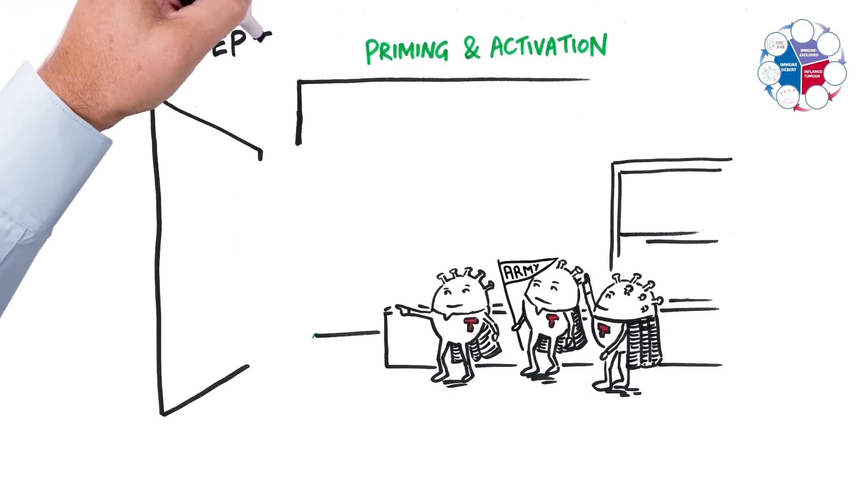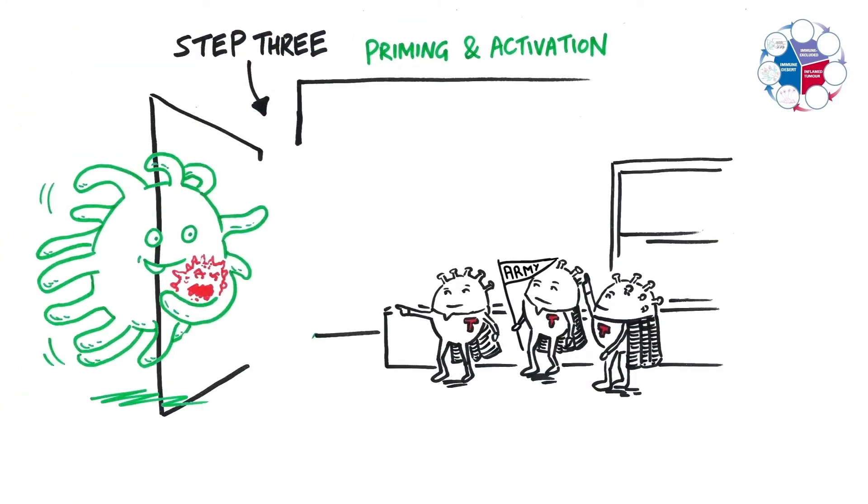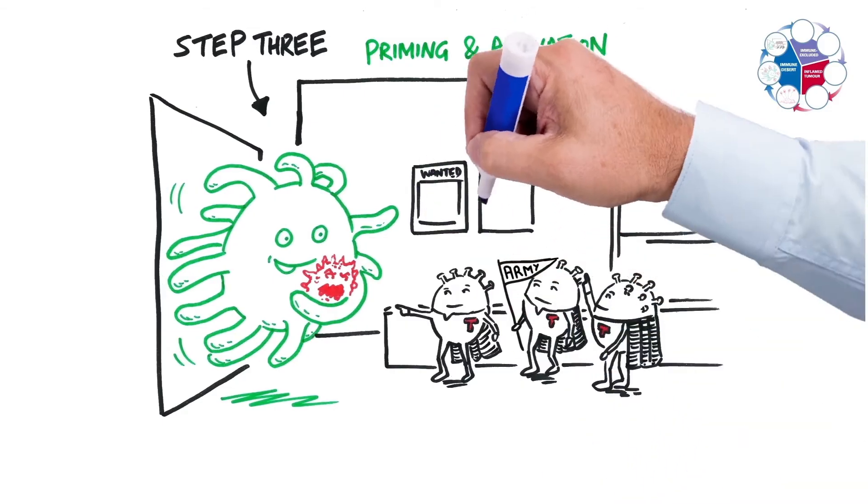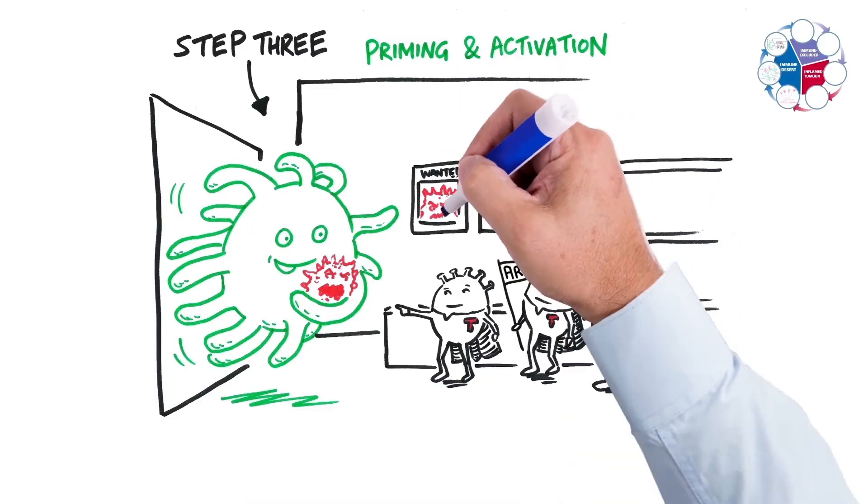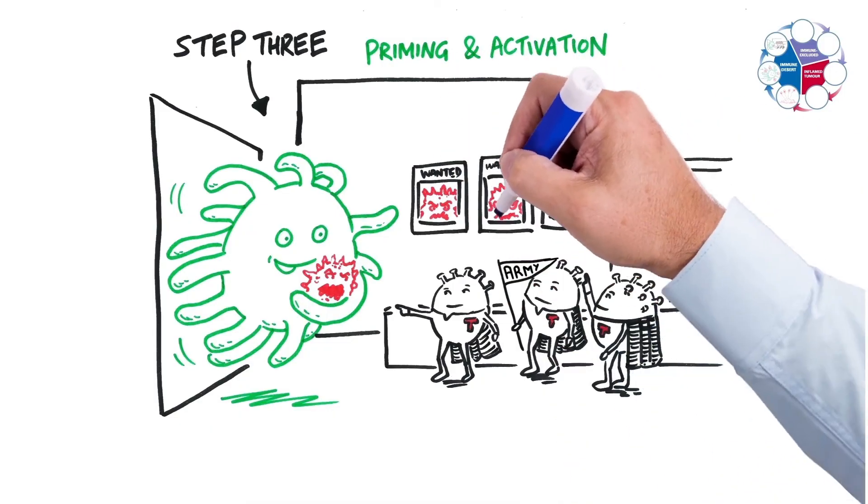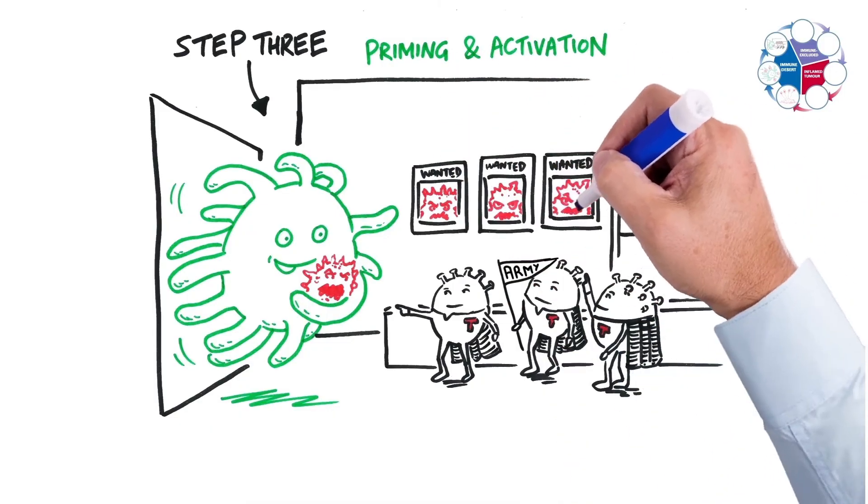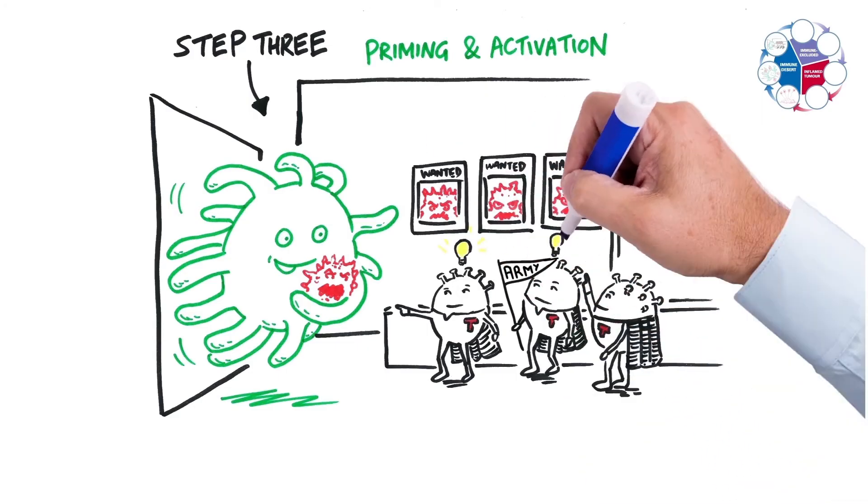In step three of the cancer immunity cycle, those antigen presenting cells can present those little protein bits from the cancer cells to T cells. And when things are working correctly, those T cells will become activated against those little protein bits from the cancer cells.